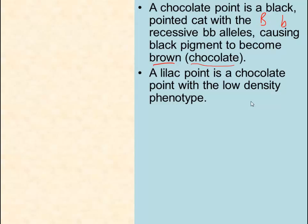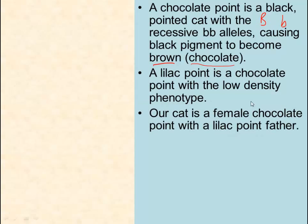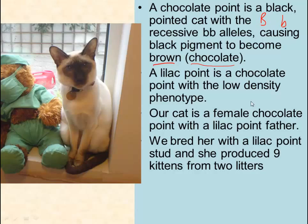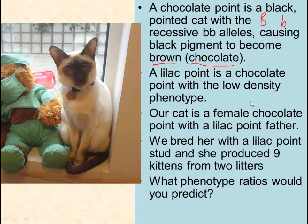So how many genes have we got involved? We've got the red gene X-O/X-o, the browning gene big B/little b, the D gene which codes for the transporter protein putting pigment into the hairs, and the C and CS gene — CS coding for a tyrosinase which denatures at warm temperatures. Our cat Alaska is a female chocolate point with a lilac point father. We bred her with a lilac point stud and she produced nine kittens from two litters. Please predict the phenotype ratios — pause the video here because I will work through this in just a moment.